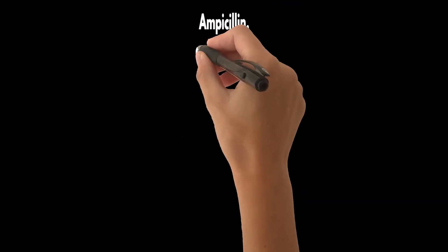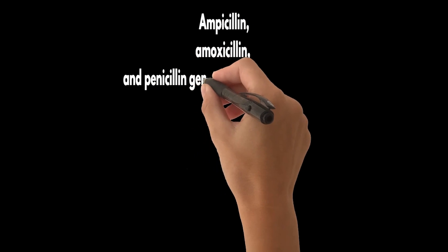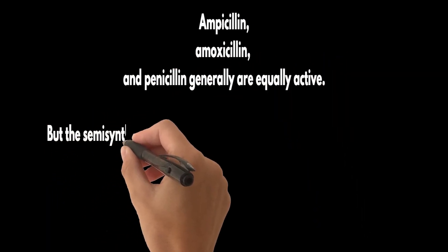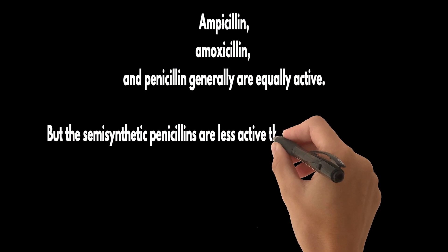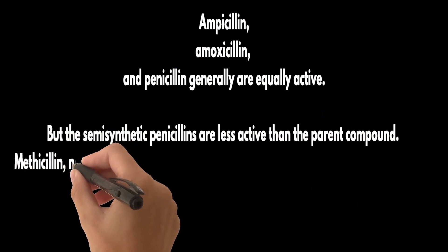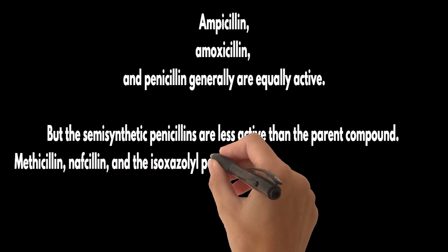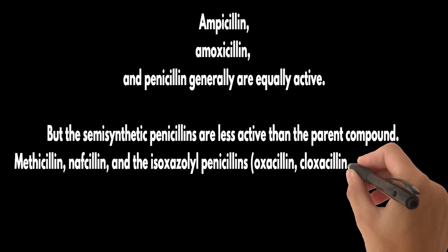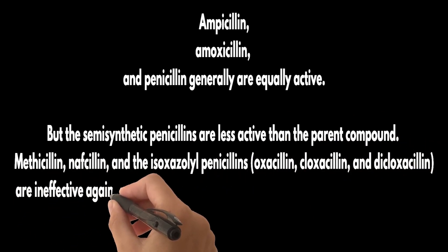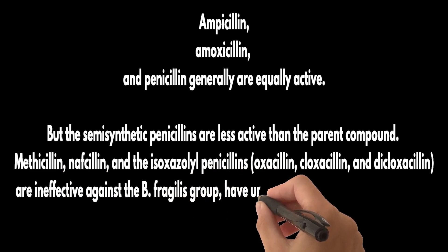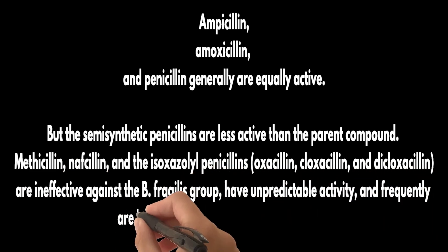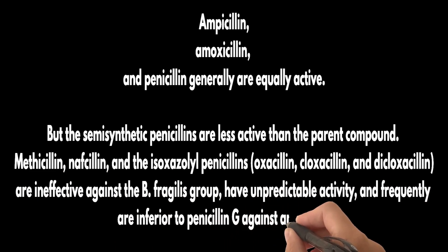Ampicillin, amoxicillin, and penicillin are generally equally active, but the semisynthetic penicillins are less active than the parent compound. Methicillin, nafcillin, and the isoxazolyl penicillins — like oxacillin, cloxacillin, and dicloxacillin — are ineffective against the B. fragilis group, have unpredictable activity, and frequently are inferior to penicillin G against anaerobes.